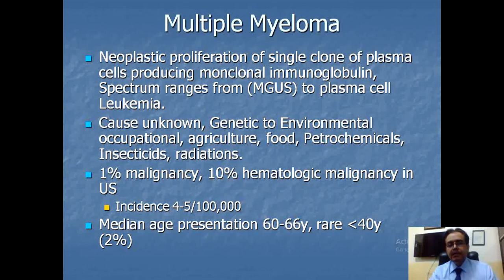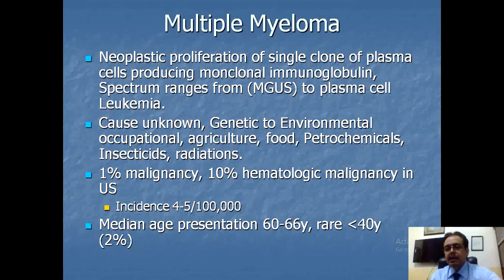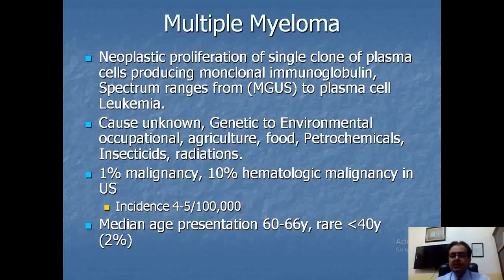The incidence of multiple myeloma is 4 to 5 cases per 100,000 malignancies. The median age at presentation is 60 to 70 years, and it rarely occurs in patients under 40 years of age — that percentage is only about 2%. Cases have been reported ranging from 40 to 80 years of age, and the median age at presentation is calculated at about 60 to 66 years.